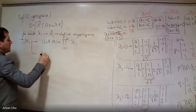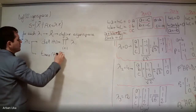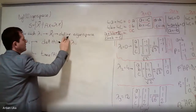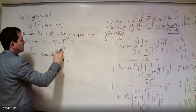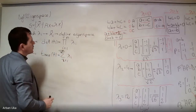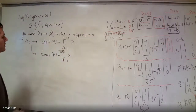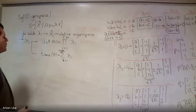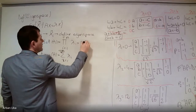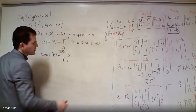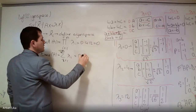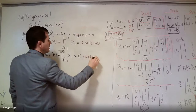We can also say that the trace of A is equal to the summation of lambda i from 1 to m. So the product of the lambda i's equals the determinant, and the sum of the lambda i's equals the trace. For the previous example, we have 0 times 4 times 12, which is 0, and the trace is 0 plus 4 plus 12, which equals 16.